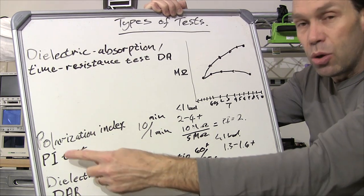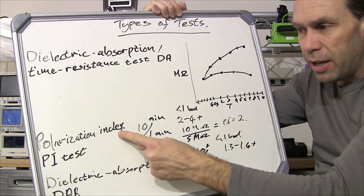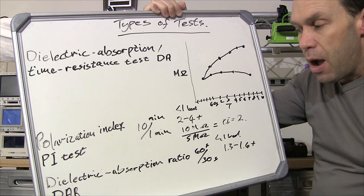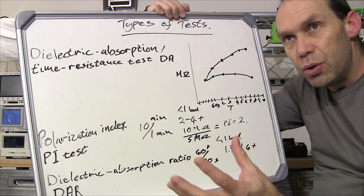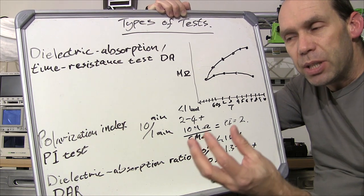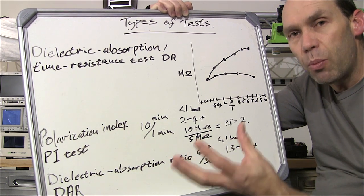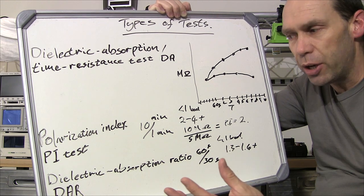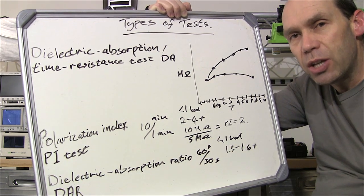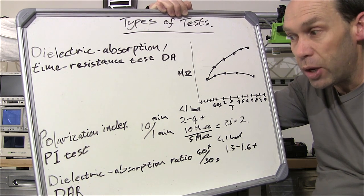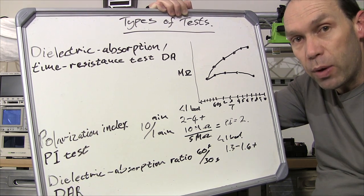Your next one is a polarization index test. Now that in particular is good for where you potentially do have potential contamination or issues or breakdown in your insulation. And this test provides you with a ratio to give you an indication of how bad things are or where you stand in terms of the health of your insulation.